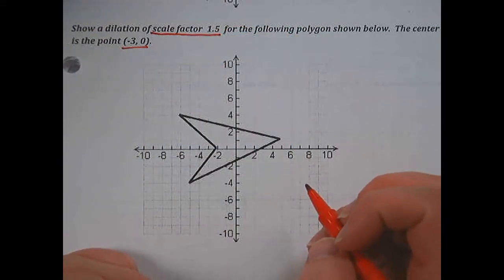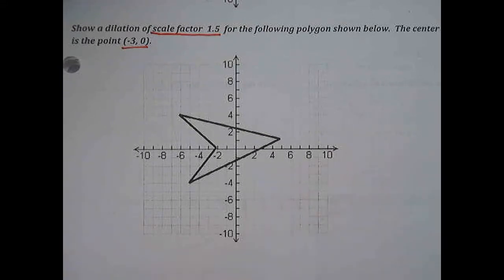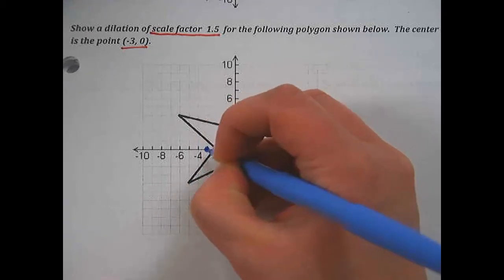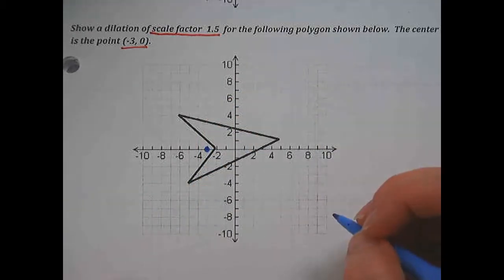On my graph, I'm going to label the point (-3, 0). So over negative 3, up 0. This is the point I'm going to be counting from when I do my dilation.